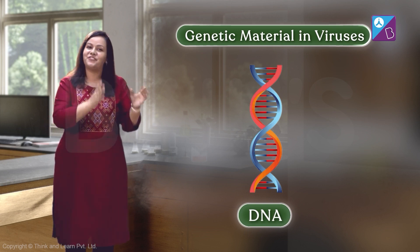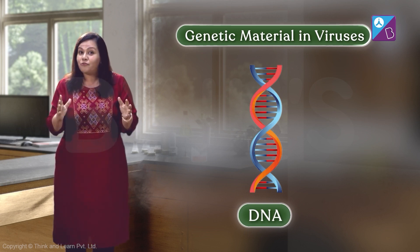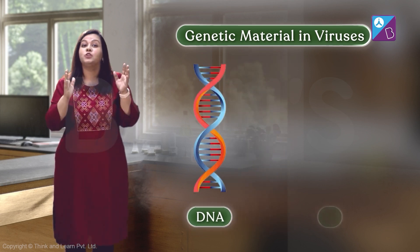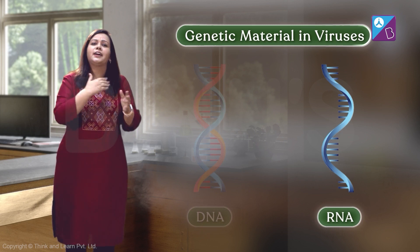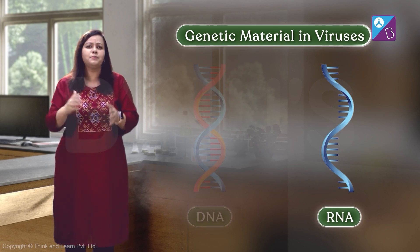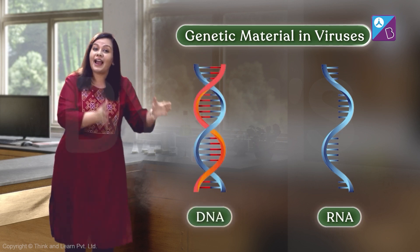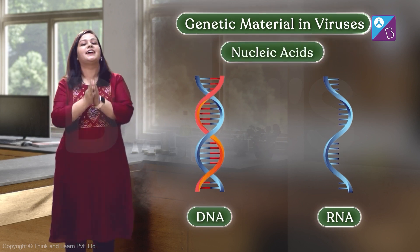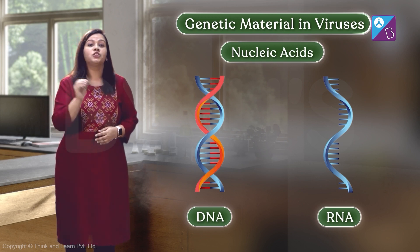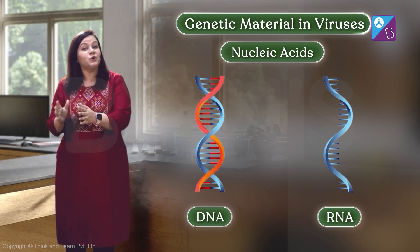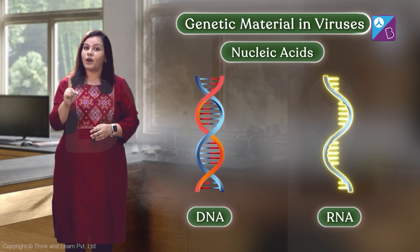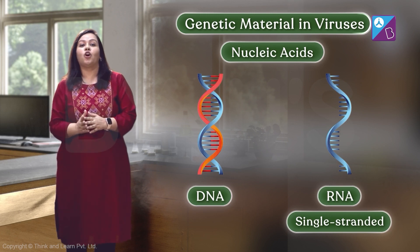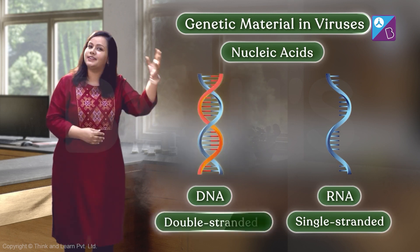But viruses are different. While some viruses do use DNA as their genetic material, there are others that use RNA, a different type of molecule, which is very similar to DNA. Both DNA and RNA belong to a category of molecules called nucleic acids. They are made of long chains. A nucleic acid molecule can have one chain or strand, which is called single-stranded, or it can be made of two strands, which is called double-stranded.